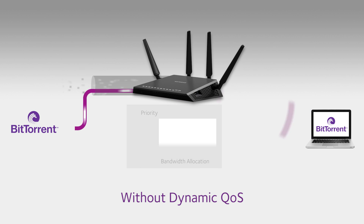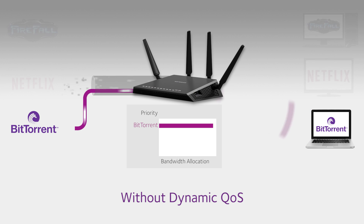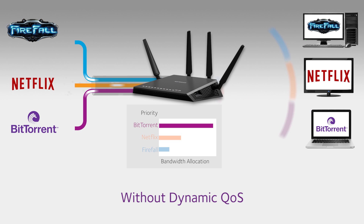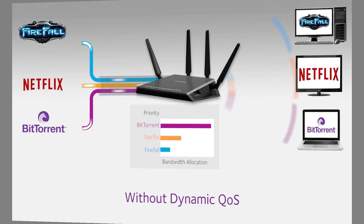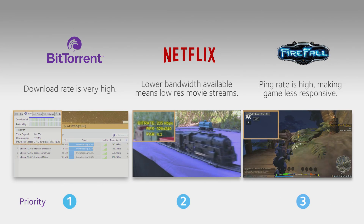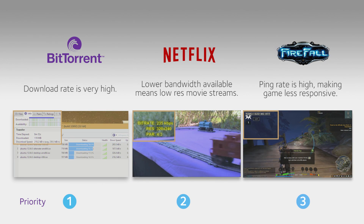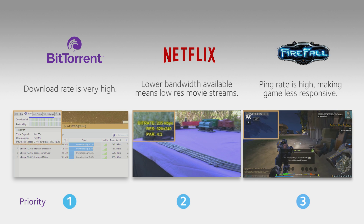Without QoS, or by not turning on QoS, a router allocates bandwidth on a first-come, first-served basis. This can affect your experience when lots of devices connect and applications are started. In this example, the majority of the internet bandwidth is taken up by a BitTorrent download.